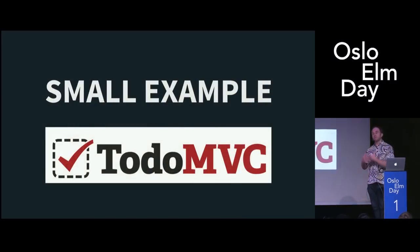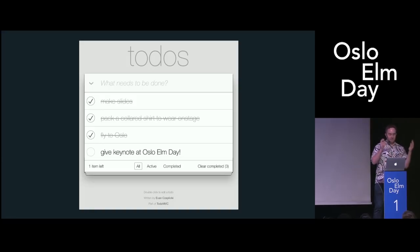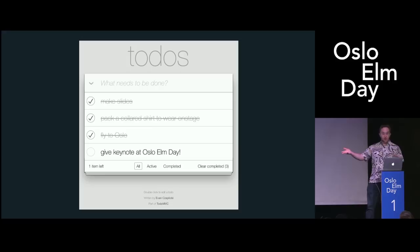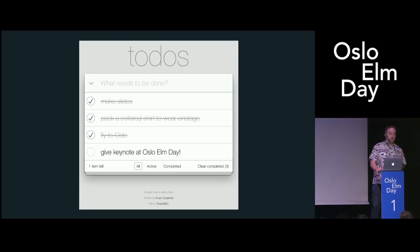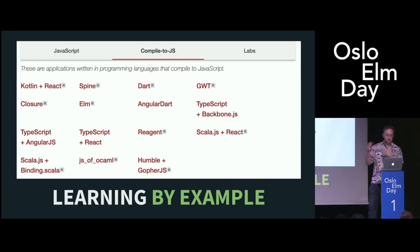So what I linked them to instead was this small example, TodoMVC. If you're not familiar with TodoMVC, basically it's a really, really simple app that's a to-do list. You can type things into the box — I typed in things like 'make slides', 'pack a collared shirt to wear on stage', 'fly to Oslo and give the keynote' — that one's not checked off because, you know, still in progress. And basically that's the whole app, it's really basic functionality. The key thing is they publish a really detailed spec on exactly what it's supposed to do, and then people can implement it in a bunch of different technologies. It's a great tool for learning by example — you can see the same functionality implemented in different technologies.